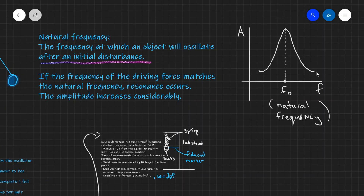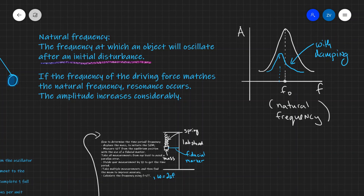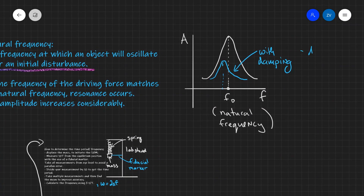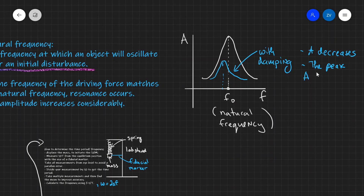If we plot amplitude against driving frequency, initially the amplitude increases as we approach the natural frequency, where the amplitude becomes extremely high. If we keep increasing the frequency beyond that, the amplitude steadily decreases. If we introduce damping into the system, the amplitude is lower throughout all oscillations, and additionally the peak shifts to the left — occurring at a lower frequency. So with damping: amplitude decreases throughout all points, and the peak amplitude occurs at a lower frequency.